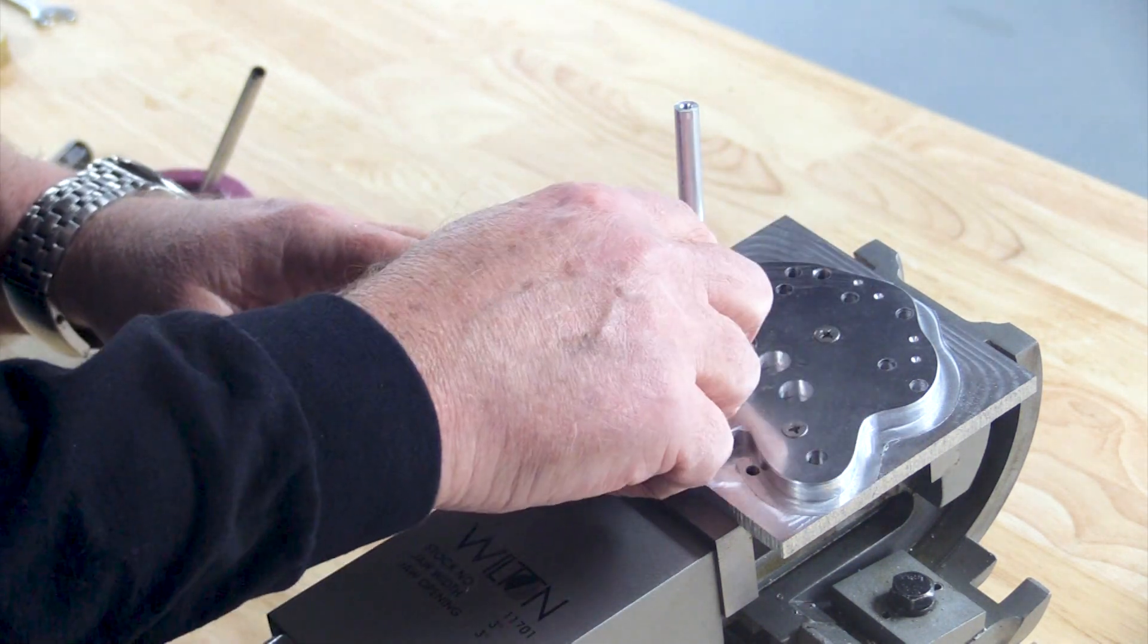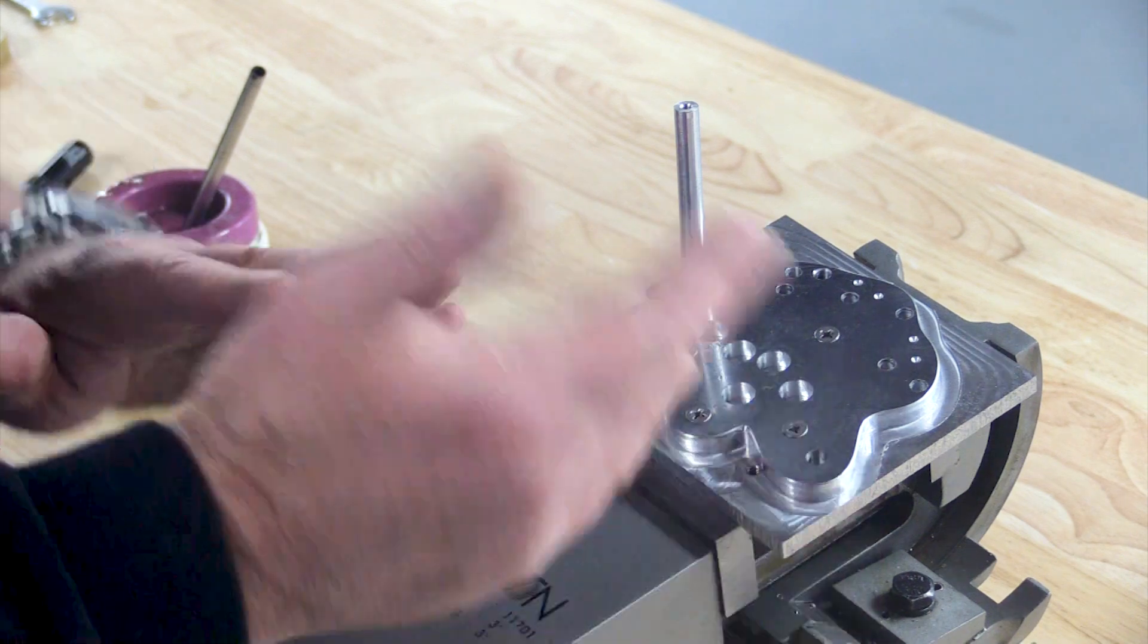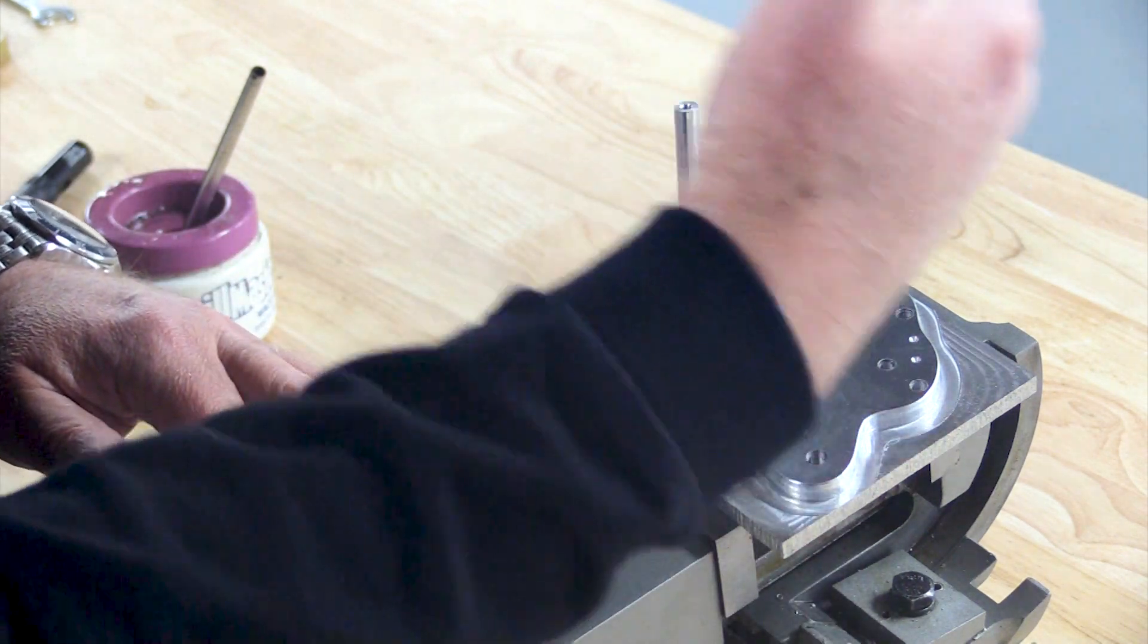Now I'm going to flip the vise 5 degrees in the other direction and then drill the holes for the other two fingers.